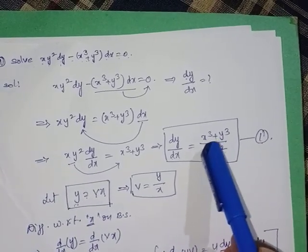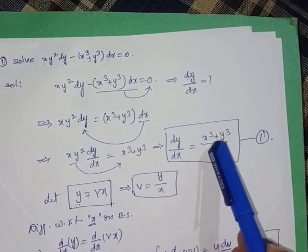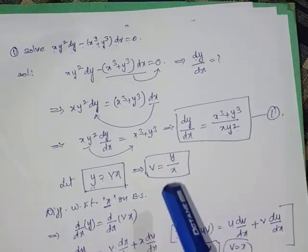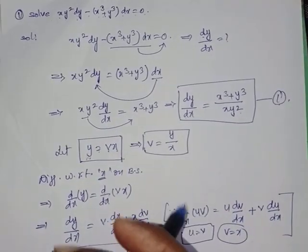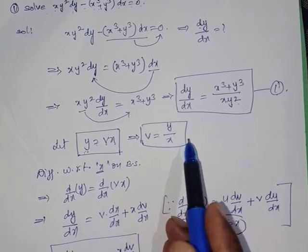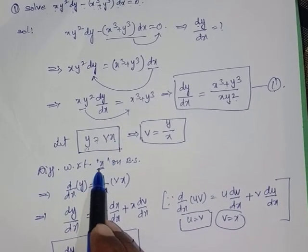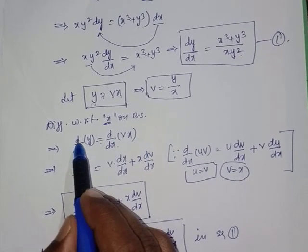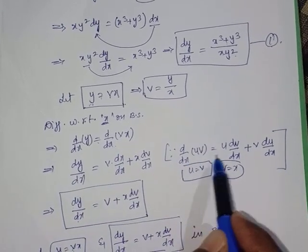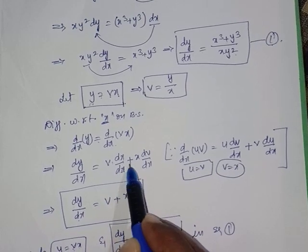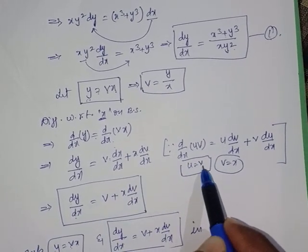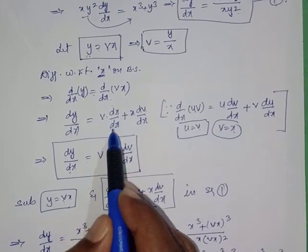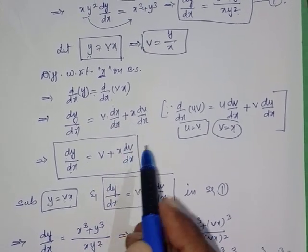Observe the right-hand side — x and y variables are in combination, indicating a homogeneous type. Use the substitution method for variable separable form: let y = vx, so v = y/x. Differentiate y = vx with respect to x on both sides using the product rule, giving dy/dx = v + x·dv/dx.